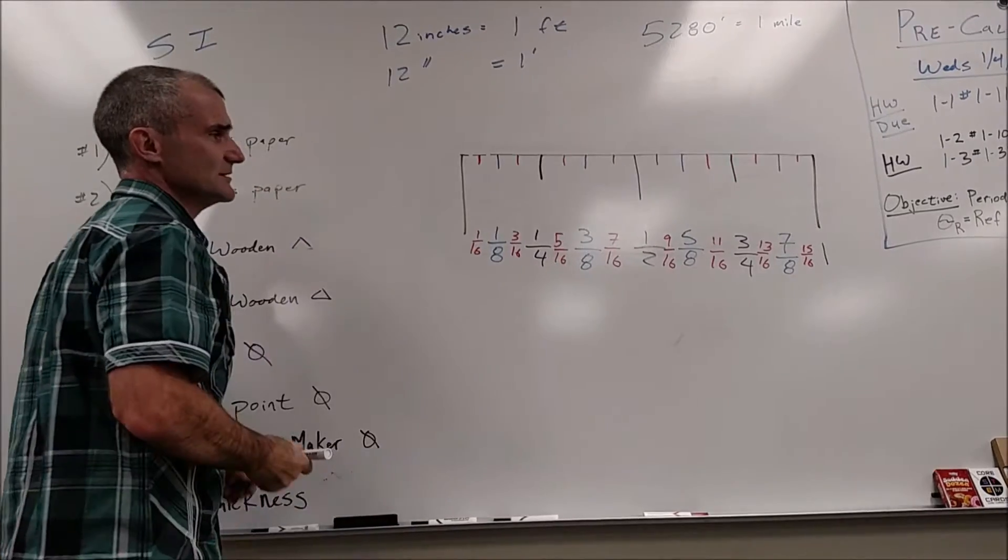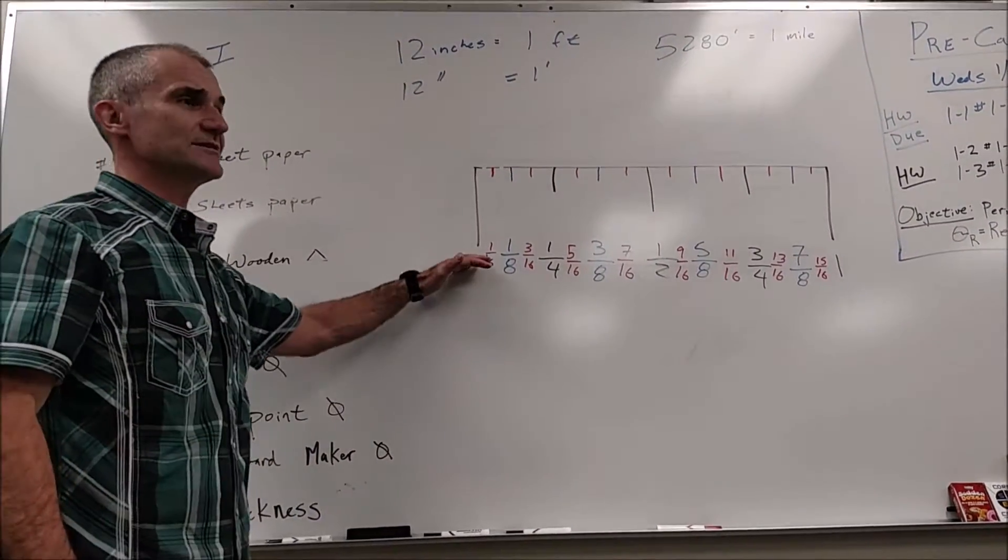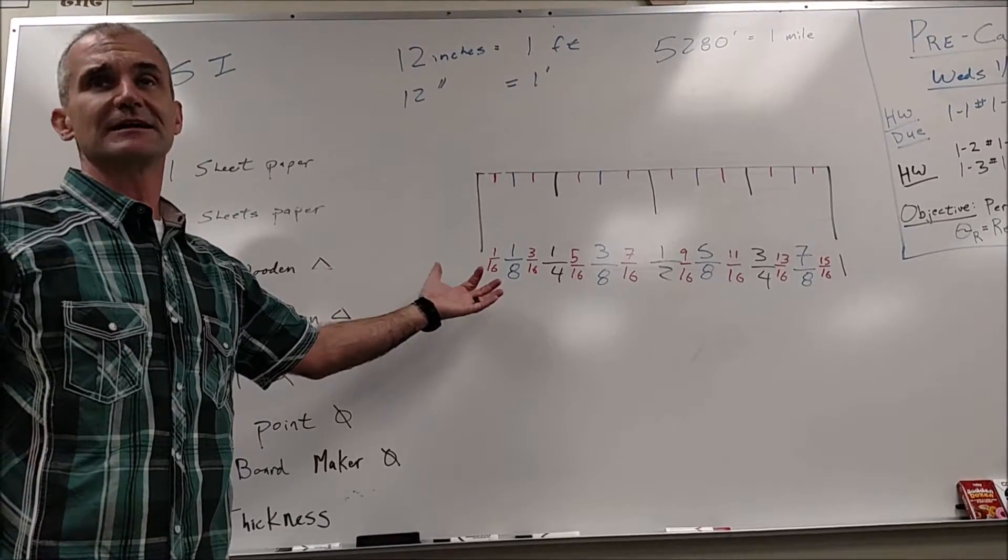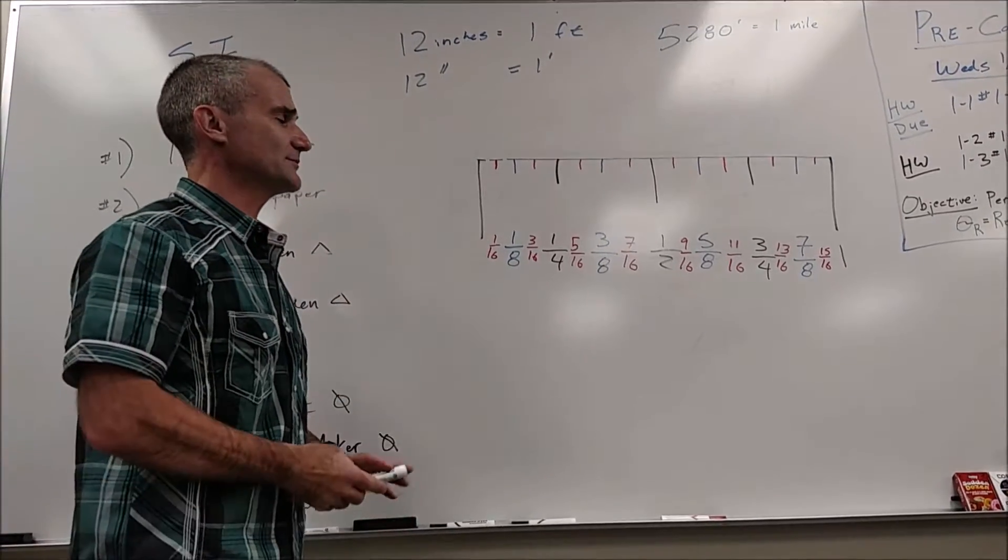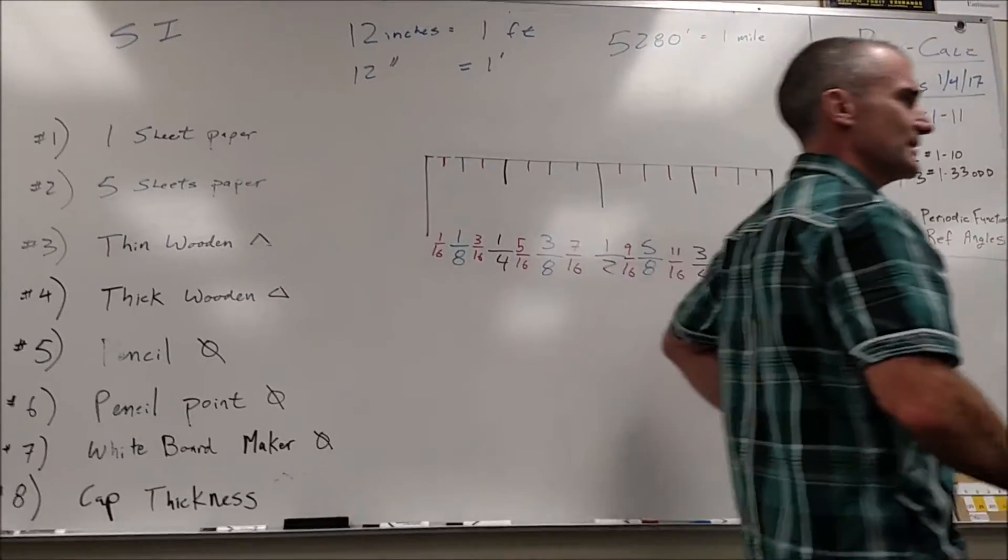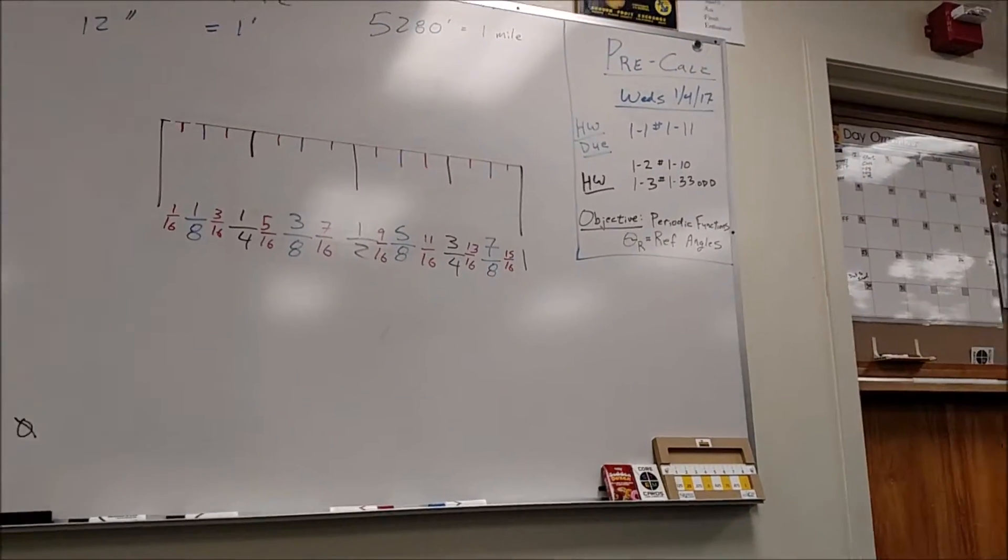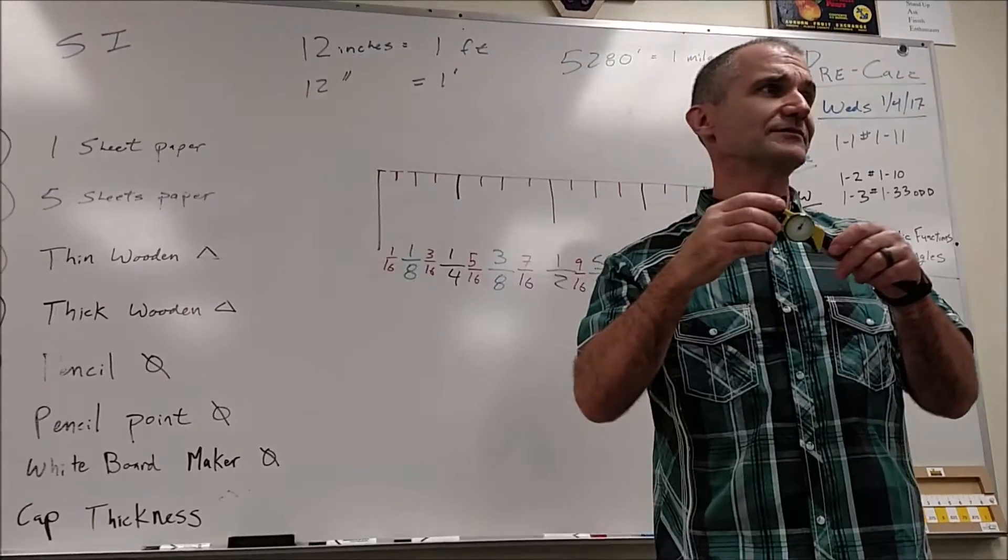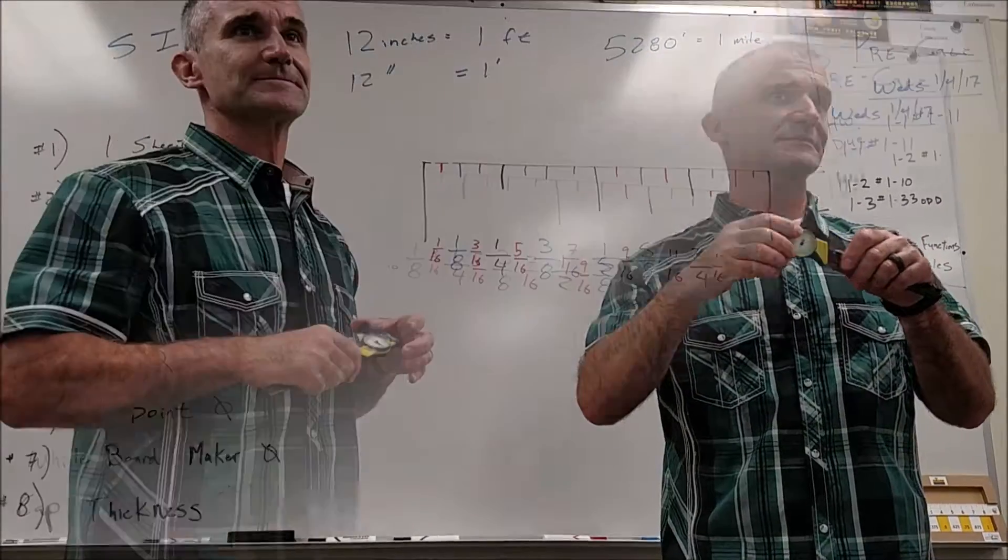Usually on a tape, you go up to an accuracy of about a sixteenth of an inch or maybe a thirty-second, but no more accurate than that. When you're done with the tape, you go to a dial caliper and you go straight from the accuracy of a thirty-second of an inch to a thousandth of an inch.